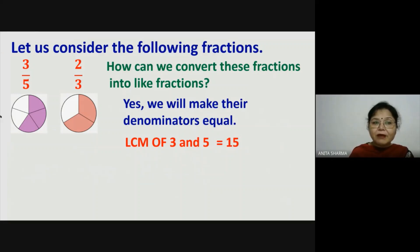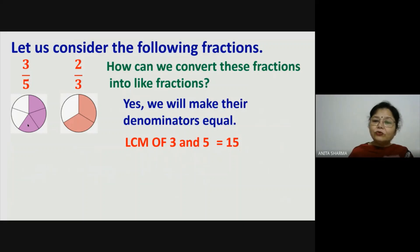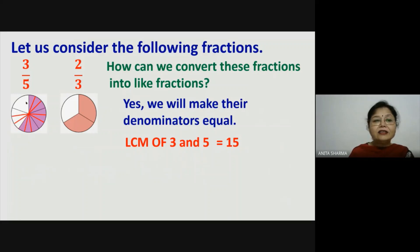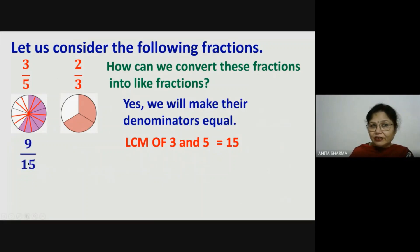Now we have to divide our whole into 15 parts. For three-fifths: we divide every one of the 5 units into 3 parts. So each part is divided into 3, giving us 15 total parts. The 3 shaded parts convert into 9 shaded parts — 3 threes are 9, and 5 parts convert into 15. So three-fifths is equivalent to nine-fifteenths. We multiply numerator and denominator by 3: 3×3=9 and 5×3=15.